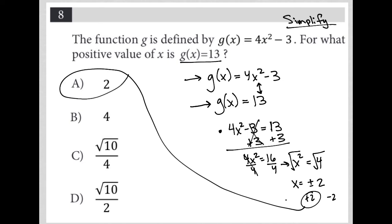If I just want to make sure that that's the case, if I plug 2 in here, 2 squared is 4, 4 times 4 is 16, 16 minus 3 equals 13, which would mean that g of 2 equals 13, which means x must have equaled 2. So the answer here is choice A.